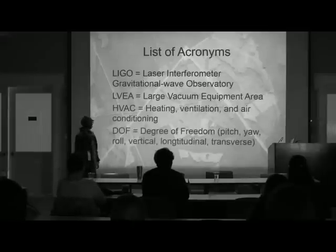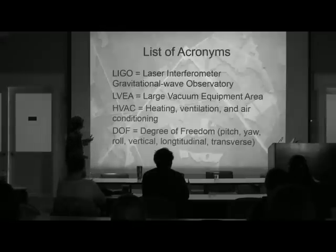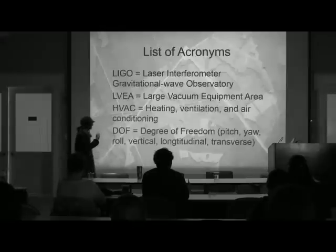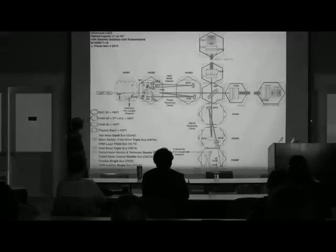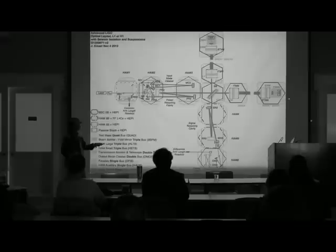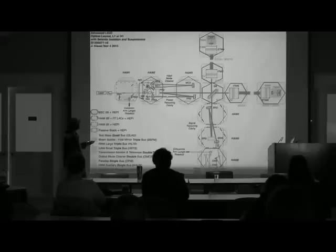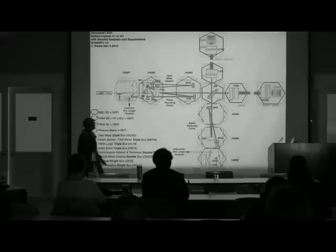DOF: degrees of freedom — LIGO has six: pitch, yaw, roll, vertical, longitudinal, transverse. I'm not going to talk about that much, just in case. This is the layout of the LVA and the VEA. The VEA doesn't have L in it because it's not large. You can see all the laser paths; they're all inside the vacuum tube that connects each chamber.